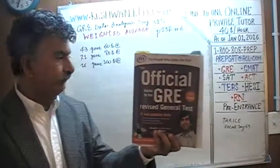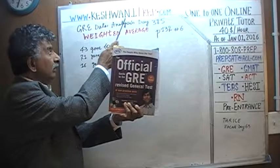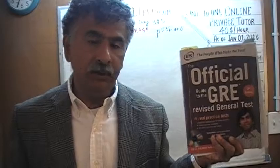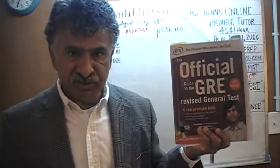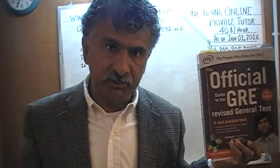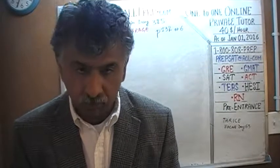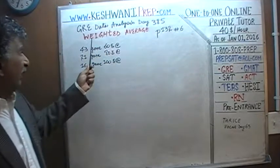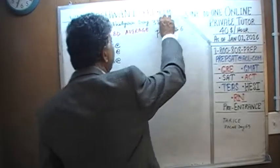Hello, my name is Keshwani — K-E-S-H-W-A-N-I. We are here because we want to prepare for the GRE. We have been solving GRE math problems out of this book, the Official Guide to the Revised GRE, second edition. If you do not own this book already, purchase one immediately — you are going to need it. Today we will continue what we have been doing for the last two days, which is the topic of weighted average, day number 386.